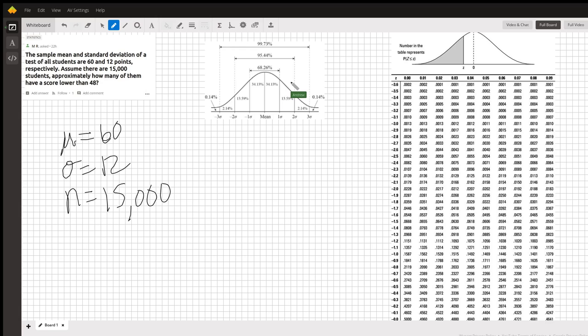we are asked how many students will have a score lower than 48. So here we know our random variable x̄ is going to be equal to 48.